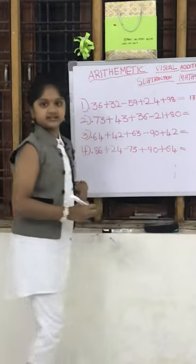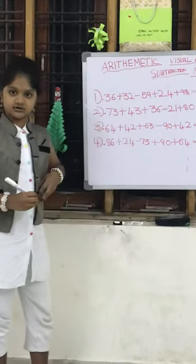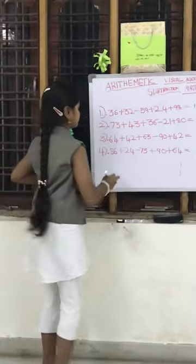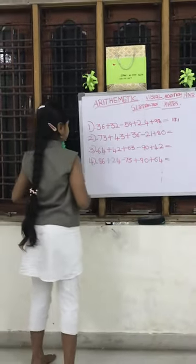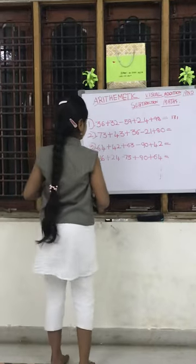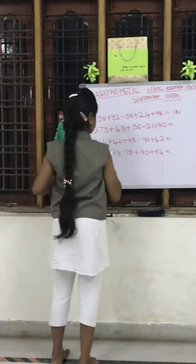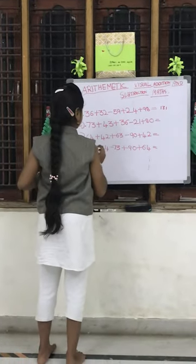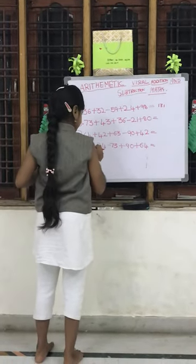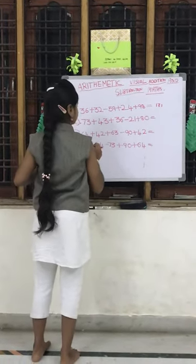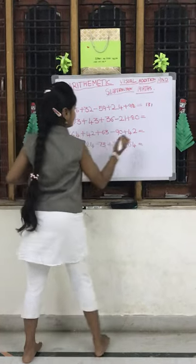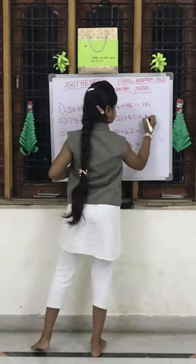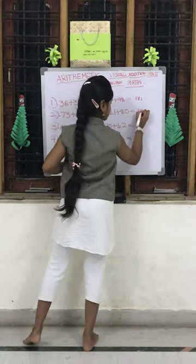Like this, I will tell you some more questions. Now, let us go to the second one. 73, 43, 36 minus 21, 80. Answer is 211.